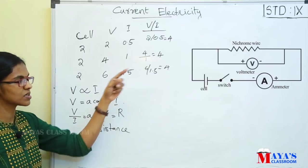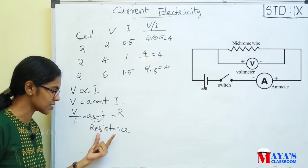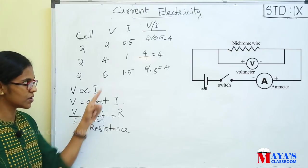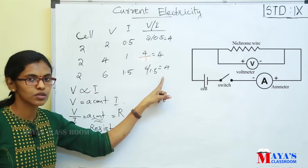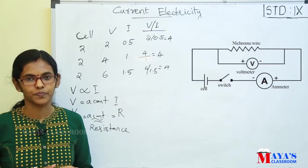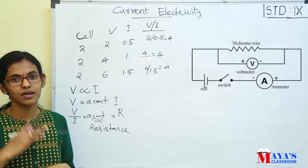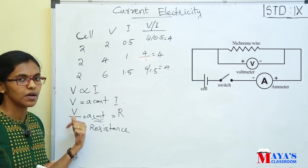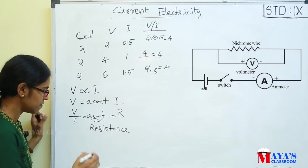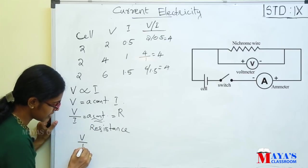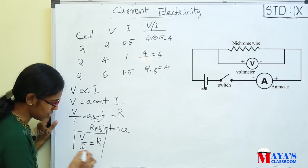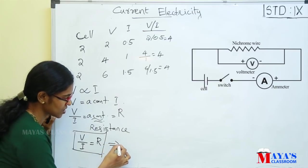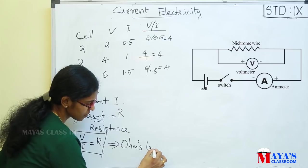Where capital R is the resistance of a conductor. If you look at the nichrome wire in the circuit, that nichrome wire has resistance — that is capital R. V by I is a constant, and that constant is the resistance of a conductor. That is Ohm's law.